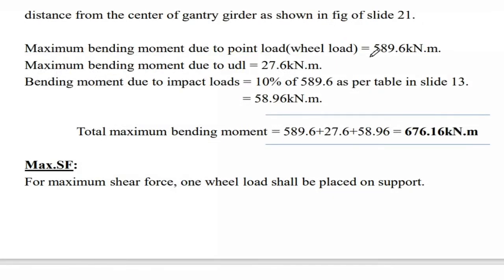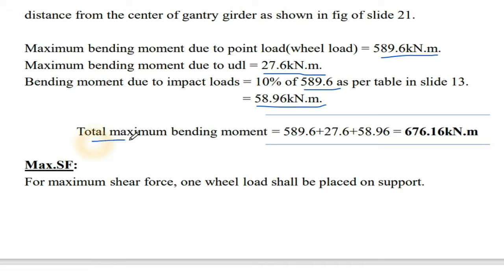Maximum bending moment due to point load is 589.6 kNm. Maximum bending moment due to UDL is 27.6 kNm. Bending moment due to impact load is 10% of 589.6 = 58.96 kNm. Total maximum bending moment is 676 kNm.